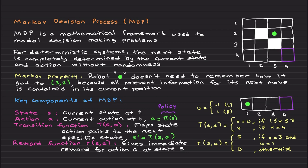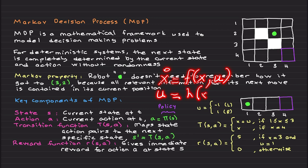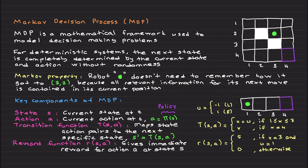We have a state — the current state at time t. We have an action based on some policy — it's the current action. And we have a transition function, which maps state-action pairs to the next specific state. We also have a reward function R depending on S and A, which gives the immediate reward for action A at state S. If you have a controls background, S-prime looks like X-dot equals F(X, U), where U looks like the policy, the control signal looks like A, and the dynamics look like the discretized version of a continuous differential equation — with feedback based on a reward function and your policy.